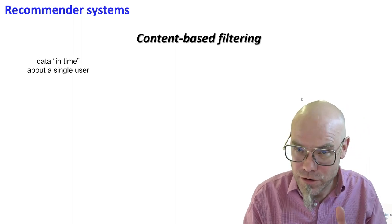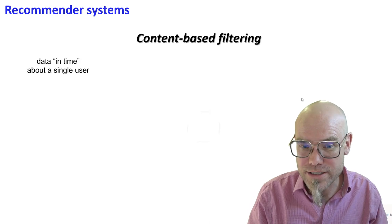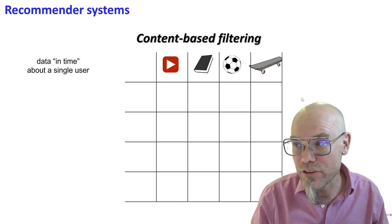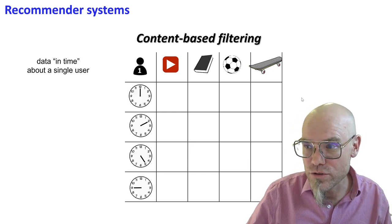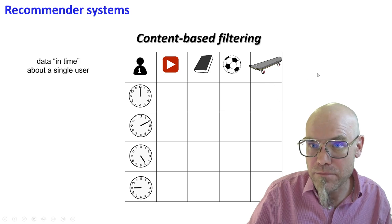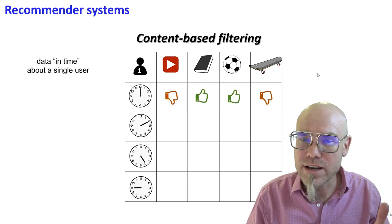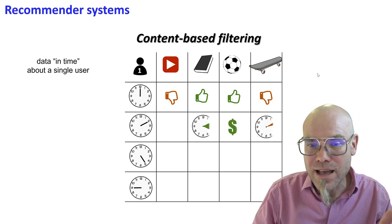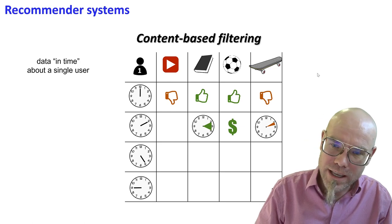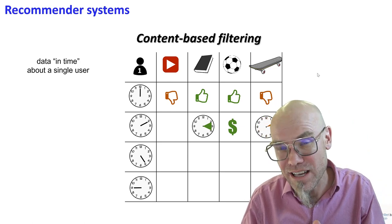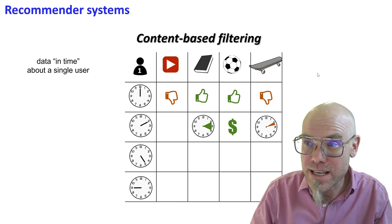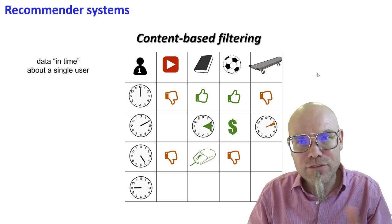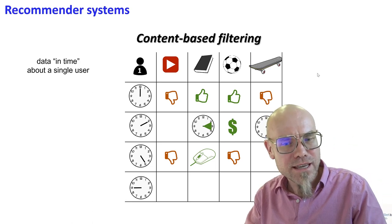Recommender engines learn information in time about you yourself. For example, we have a database here with four different products. Then we have you as the user with certain behavior in time. As I monitor you on the webpage, I can see you like some products and don't like others. You spend more time looking at some and less time on others. You're spending money on some categories. I see you clicking or not clicking. I have a lot of footprints about how you behave in that space.